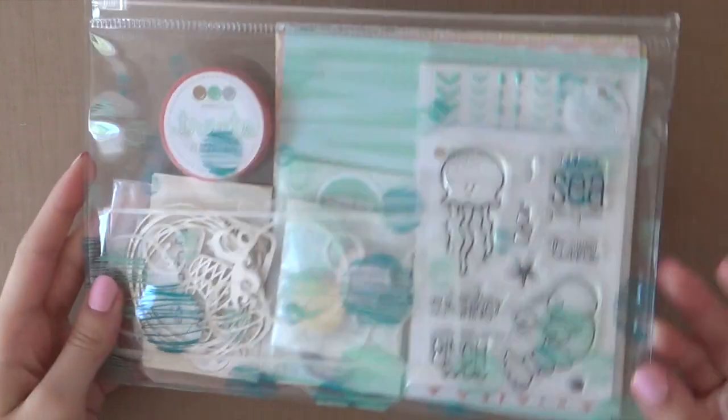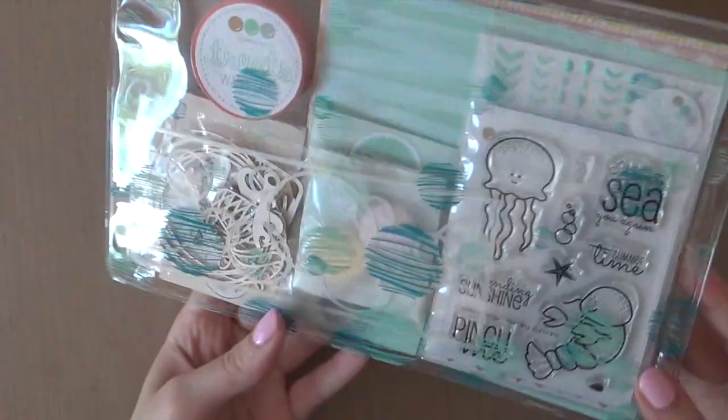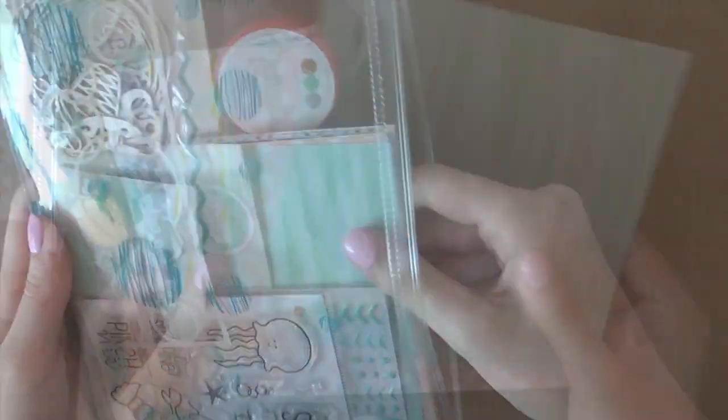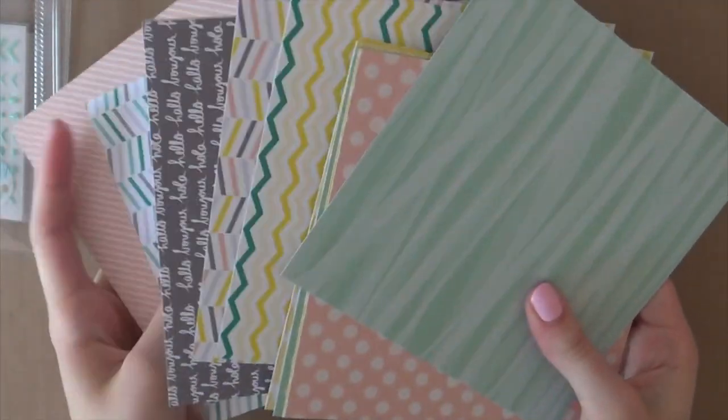Create A Smile is a German stamp company and they recently released a card kit called the Sending Sunshine kit. This kit comes with a lot of products and the first product I'm going to show you are the pattern papers.